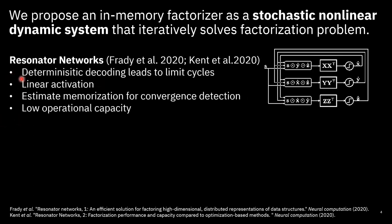The resonator works deterministically, which means it has some vulnerability to what we call limit cycles. It also has a linear activation, meaning similarity values calculated in a certain iteration are used as-is for the superposition or projection operation that comes next. For convergence detection, the vector estimates of a certain iteration are compared with the previous iteration, requiring some memorization. Even though at that time it would have a high operational capacity, we see that compared to our work it has a relatively low operational capacity.